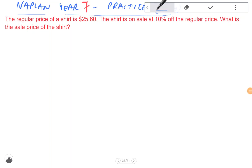The regular price of a shirt is $25.60. The shirt is on sale at 10% off the regular price. What is the sale price of the shirt?